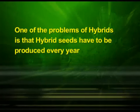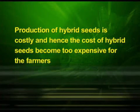Hybrid varieties of several food and vegetable crops are being extensively cultivated, and cultivation of hybrids has tremendously increased productivity. One of the problems of hybrids is that hybrid seeds have to be produced every year. If the seeds collected from hybrids are sown, the plants in the progeny will segregate and do not maintain hybrid characters. Production of hybrid seed is costly and hence the cost of hybrid seeds becomes too expensive for the farmers. If these hybrids are made apomictic, there is no segregation of characters in the hybrid progeny.